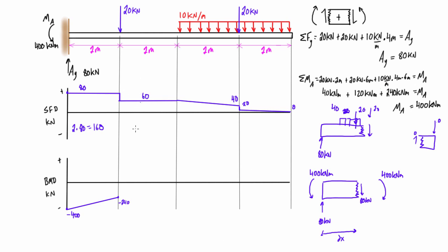Looking at the next section: 2 meters times 60 kilonewtons gives a change in magnitude of 120 kilonewton meters on the bending moment diagram. Starting from negative 240, adding 120 in the positive direction takes us to negative 120 kilonewton meters. Again, that was a horizontal line on the shear force diagram, so we get a linear change across the bending moment diagram.